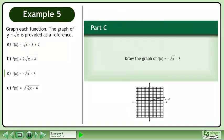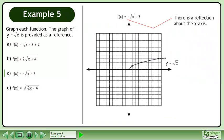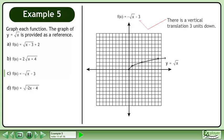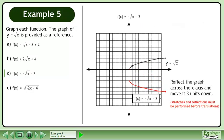In Part C, draw the graph of f equals the negative square root of x minus 3. There is a reflection about the x-axis and there is a vertical translation 3 units down. Reflect the graph across the x-axis and move it 3 units down.